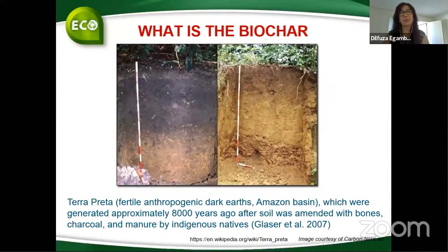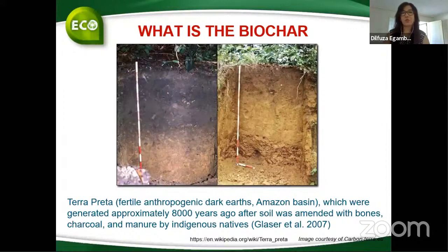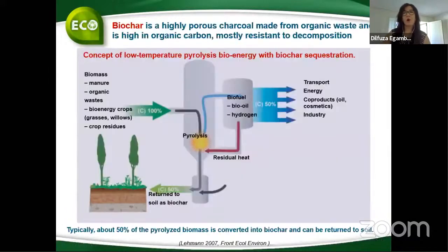Biochar is not new — even in Central Asia. I began this project five years ago in Germany in collaboration with Malaysia and Indonesia. Biochar is like what we call terra preta — the fertile anthropogenic dark earth. Bones and organic waste deposited over many years become rich in carbon and fertile. This technology works like charcoal made from any organic waste: roots, agricultural waste after biogas production, or organic industrial waste.